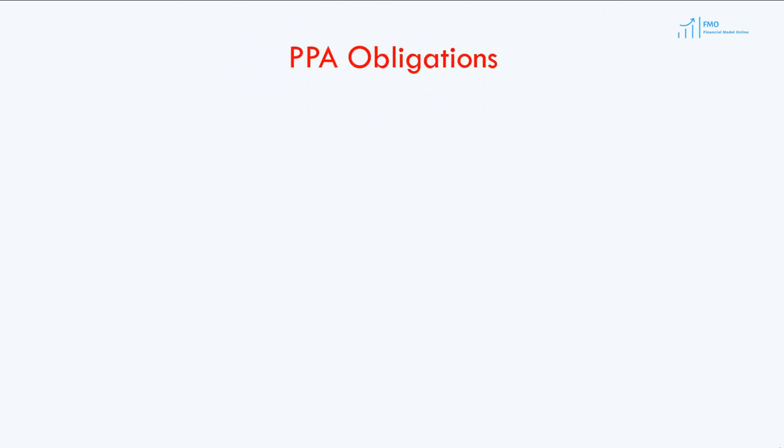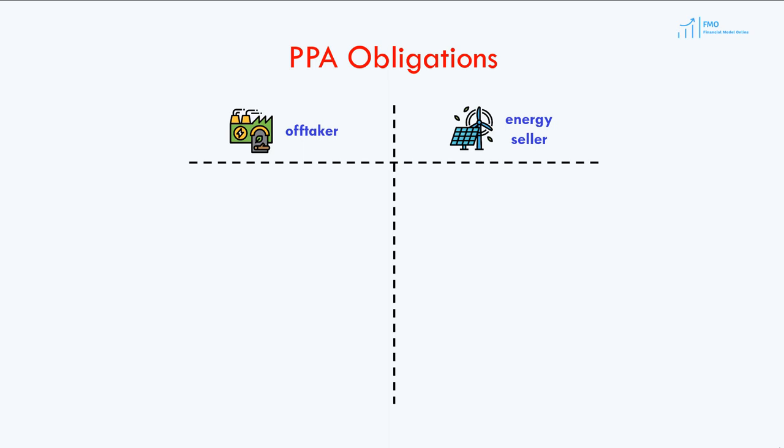In the previous lesson, we focused on energy sales under the PPA, and briefly reviewed the obligations of the off-taker and energy seller with respect to energy sales. The off-taker has an obligation to purchase the energy production during the term of the PPA, while the energy seller has an obligation of generating and delivering the energy production. These energy purchase and sale are the main obligations of the off-taker and energy seller.